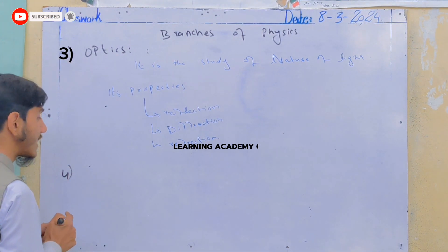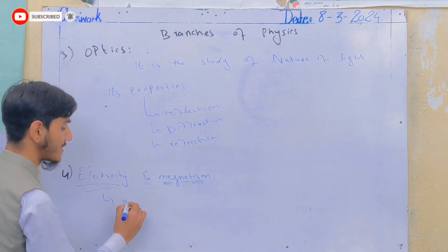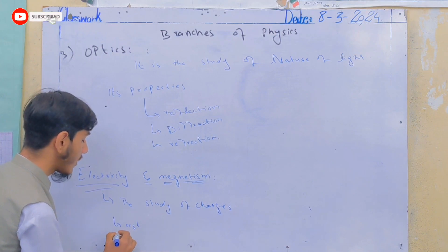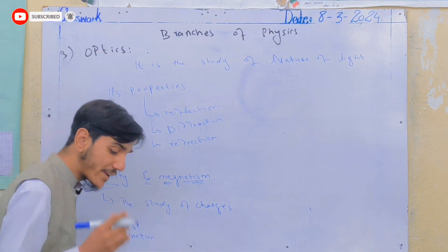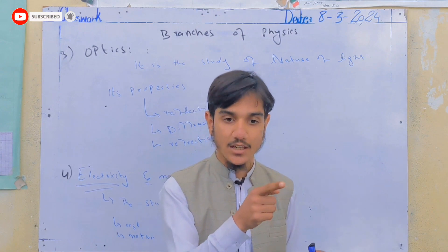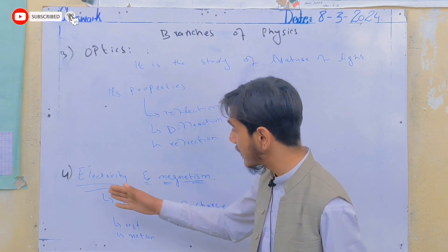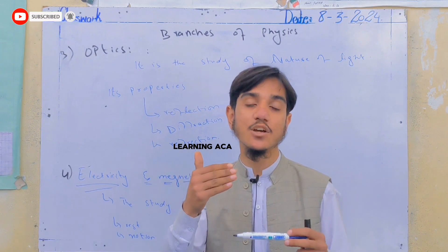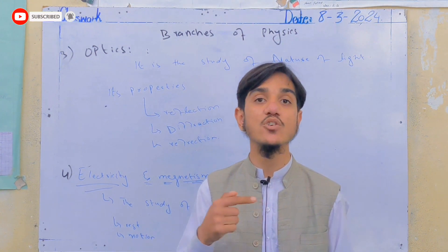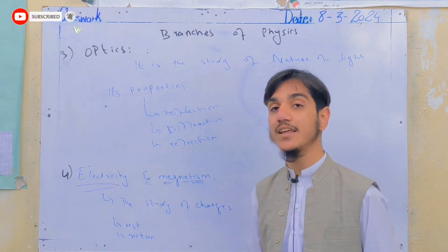The fourth branch is electricity and magnetism. Electricity and magnetism is basically the study of charges. Charges can either be at rest or in motion. When charges are in motion, current flows — that is electricity. When charges are in motion, they also produce a magnetic field. The entire study of these charge properties is called electricity and magnetism.